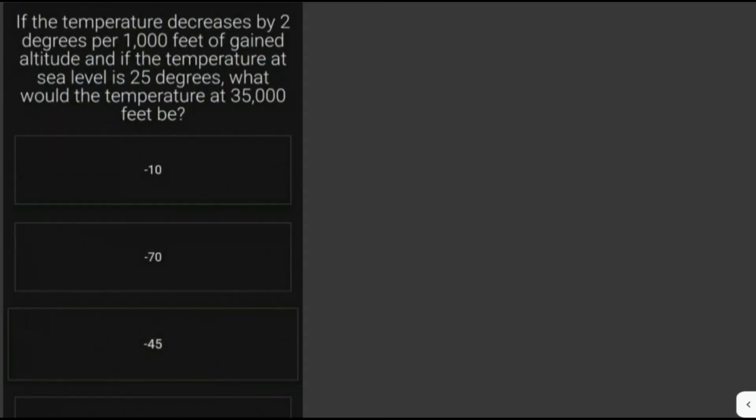If the temperature decreases by 2 degrees per 1,000 feet of gained altitude, and if the temperature at sea level is 25 degrees, what would be the temperature at 35,000 feet? So we're given here that at sea level, the temperature is 25 degrees. So at zero altitude, the temperature is just equal to 25 degrees.